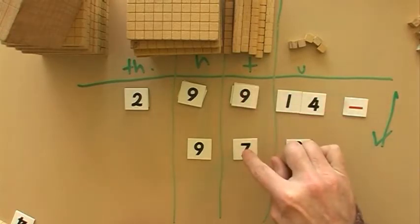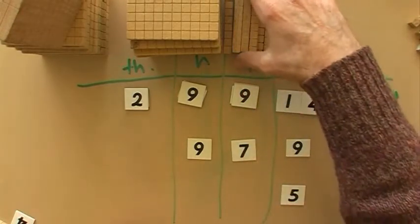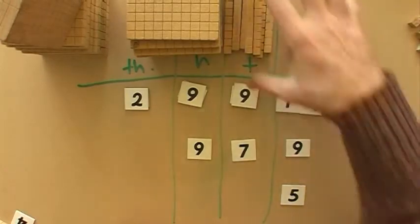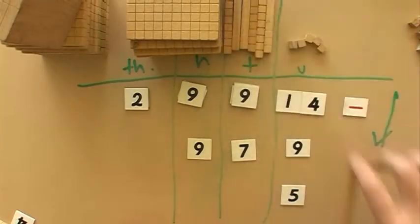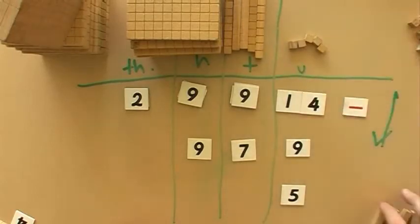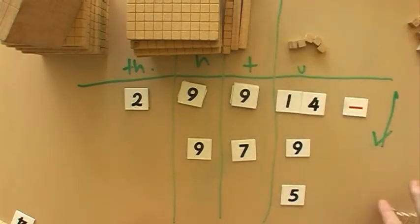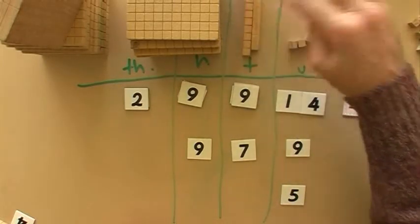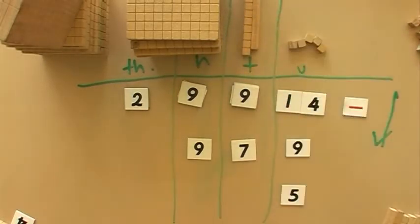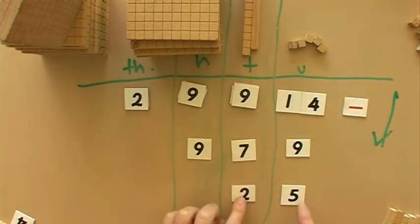Now I've got nine take away seven. So there's the nine. Let's take away seven. One, two, three, four, five, six, seven. So I've done nine take away seven. What have I got left? One, two. Nine take away seven is two. So I can put that two down here.